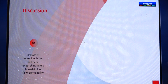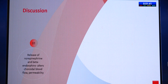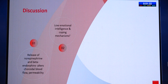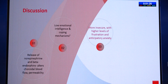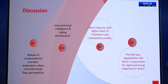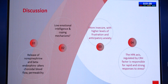CSCR is caused by sympatho-adrenergic dysregulation, leading to release of norepinephrine and beta-endorphins, which alters choroidal blood flow and permeability. Conrad et al. also stated that low emotional intelligence and coping mechanisms are related to CSCR, since these patients have poor adaptive responses. These findings are more commonly seen in acute cases, where patients tend to be more insecure with higher levels of frustration and anticipatory anxiety. The hypothalamic-pituitary-adrenal axis, regulated by corticotrophin-releasing hormone, is responsible for rapid and strong stress responses, also causing the release of cortisol.